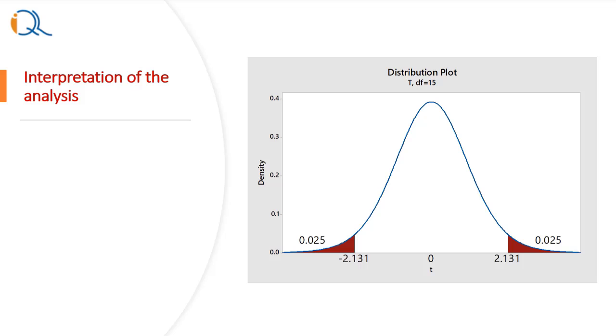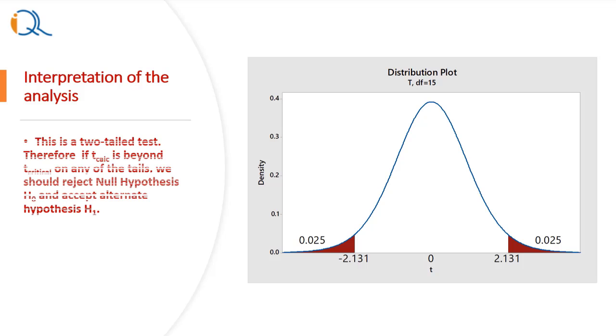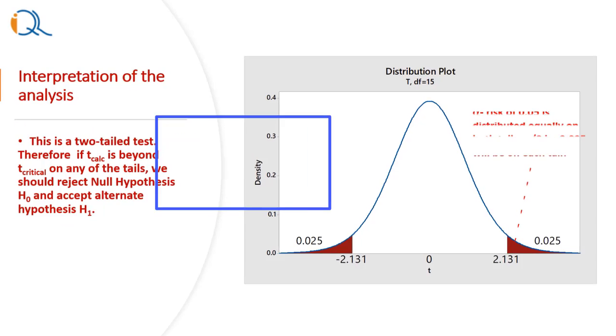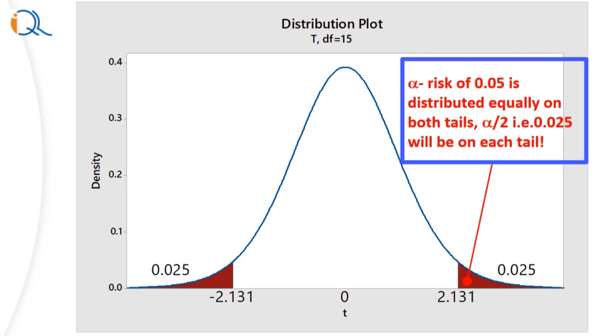Now let us interpret the analysis. This is a two-tailed test. Therefore, if T calculated is beyond T critical on any of the tails, we should reject null hypothesis H0 and accept alternate hypothesis H1. Note that alpha-risk of 0.05 is distributed equally on both tails and therefore alpha by 2 that is 0.025 will be on each tail and you can see this in the figure.